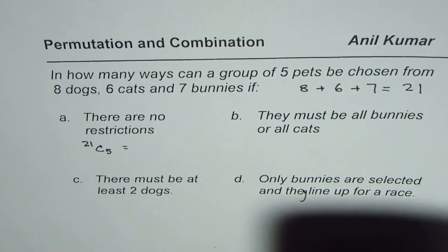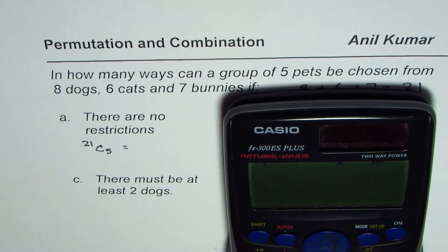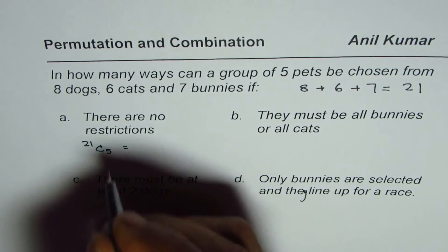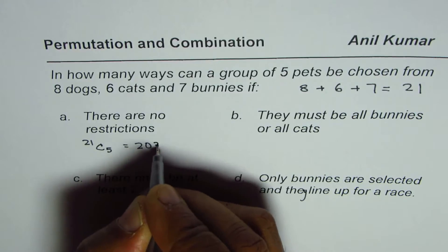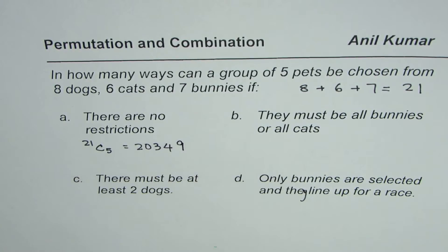You are selecting some out of given and each group, the order is not important. So that is why we used combination. So 21C5 is 20349.